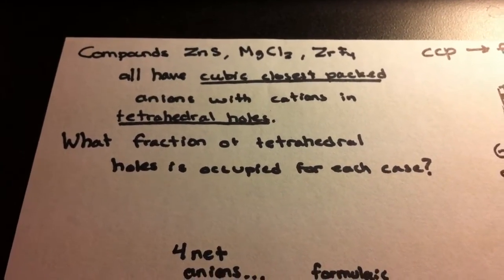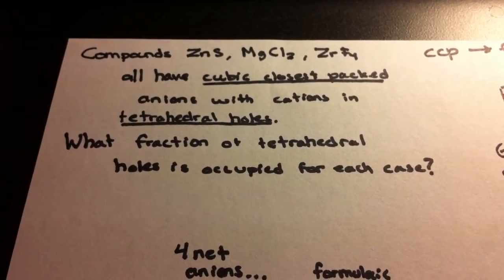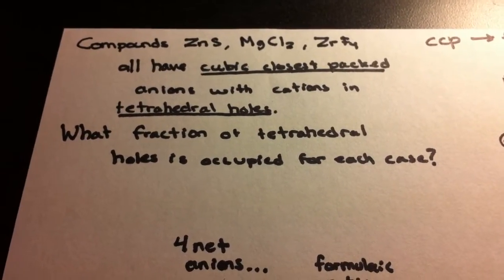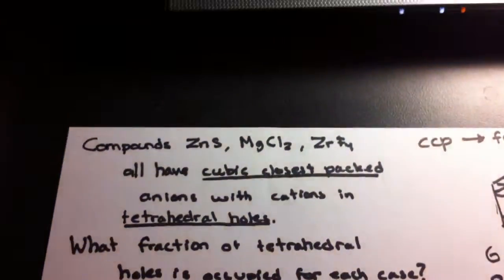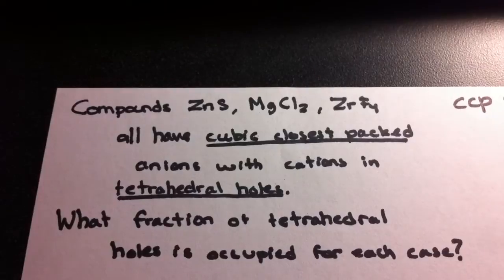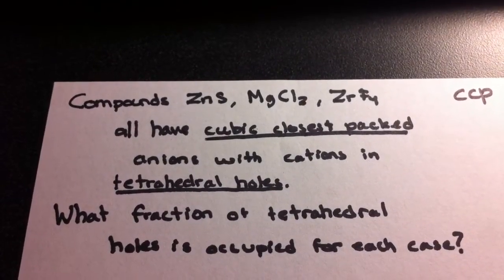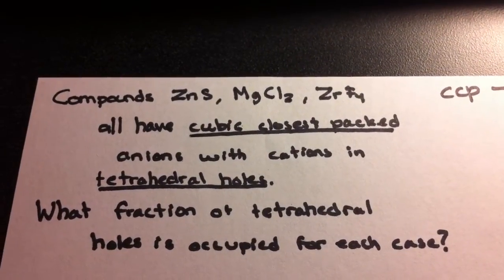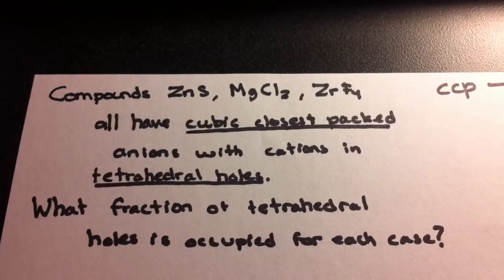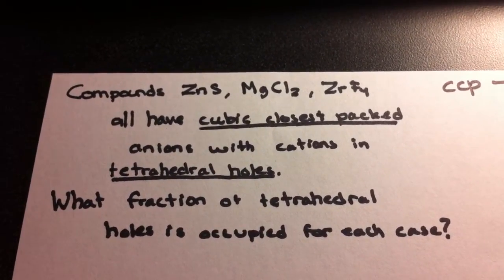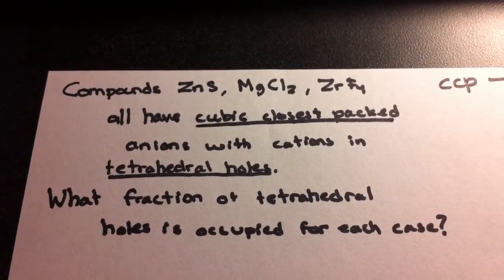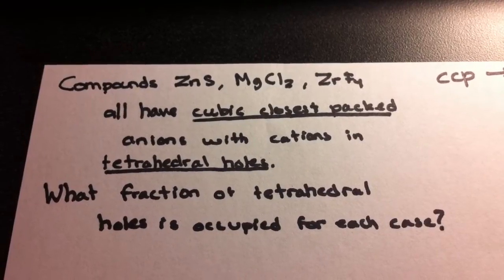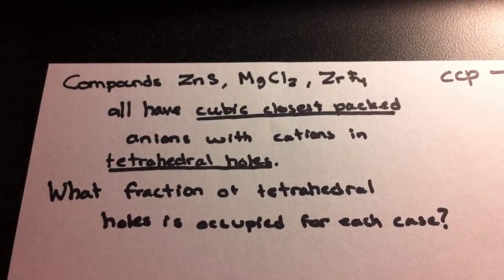How do we know the fraction of tetrahedral holes occupied for any ionic compound? Let's begin with a case problem. In this problem, we're going to have zinc sulfide, magnesium chloride, and zirconium fluoride. These all will have the cubic closest packed structure for the anions, and the cations will be fitted into tetrahedral holes.